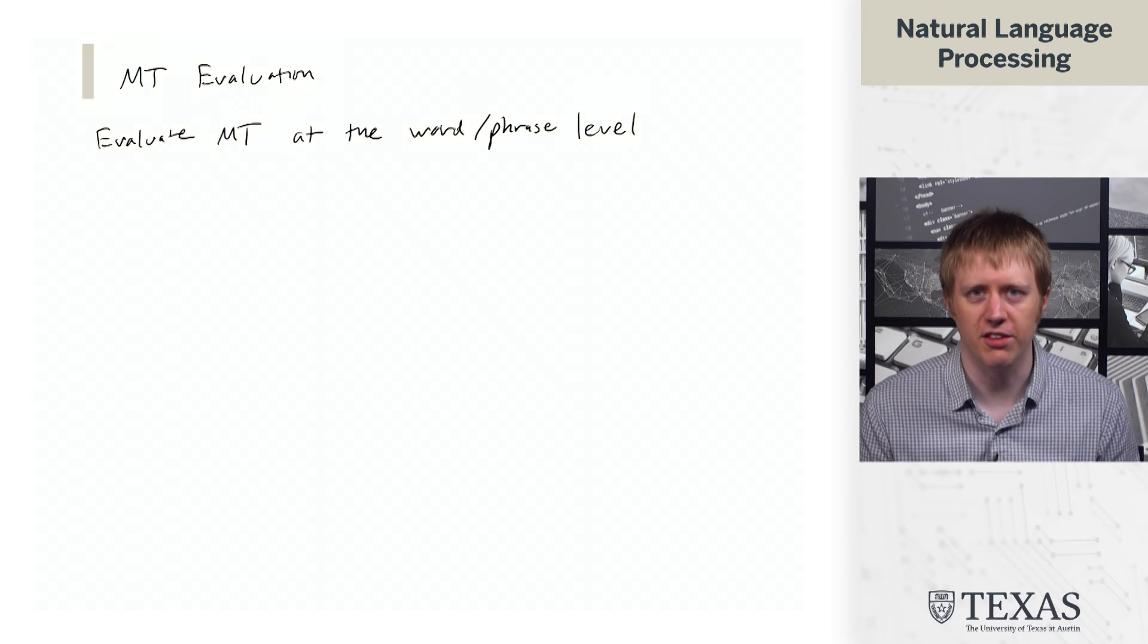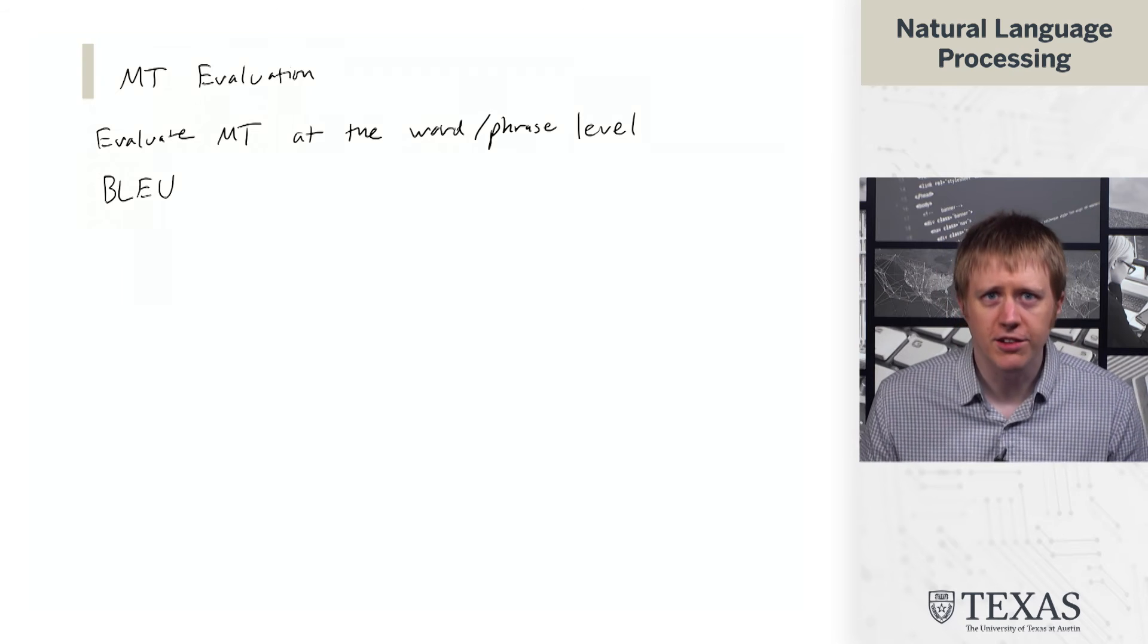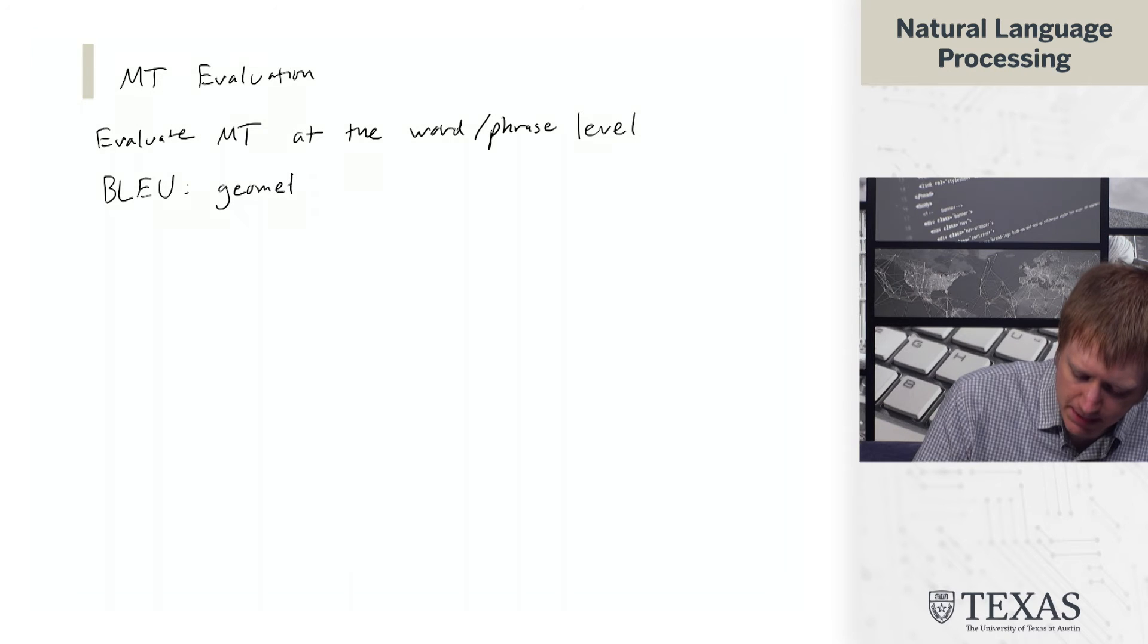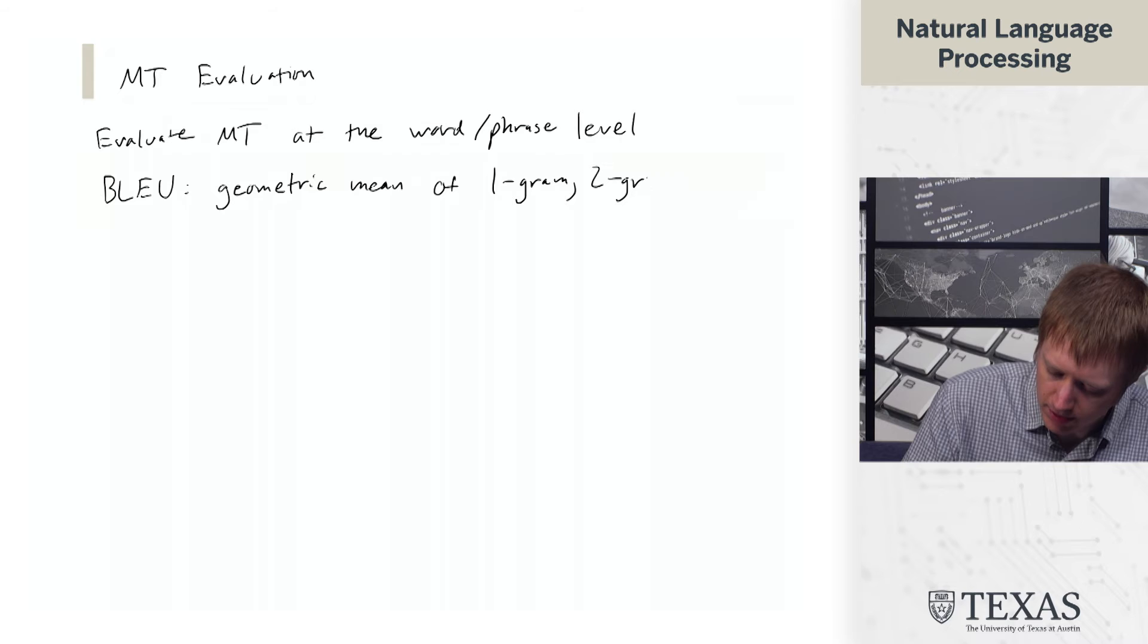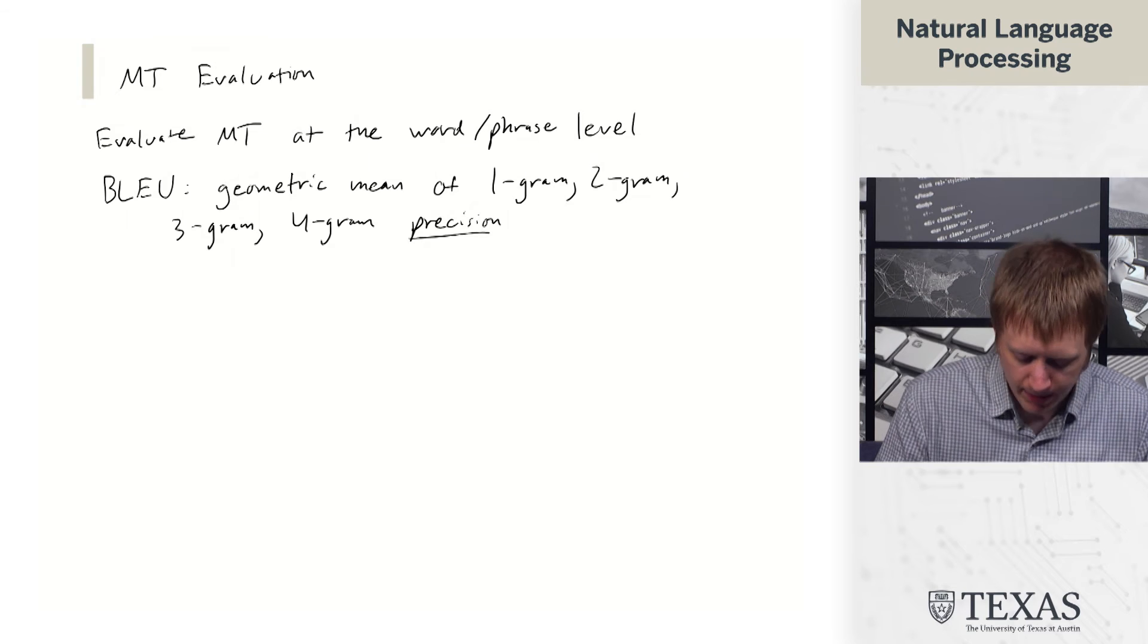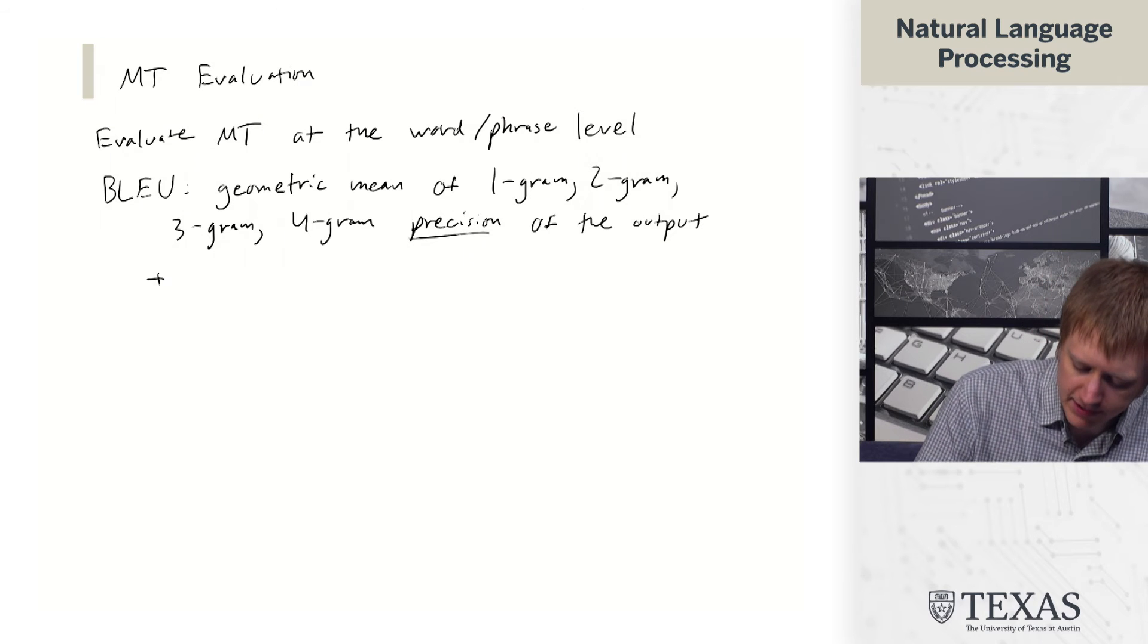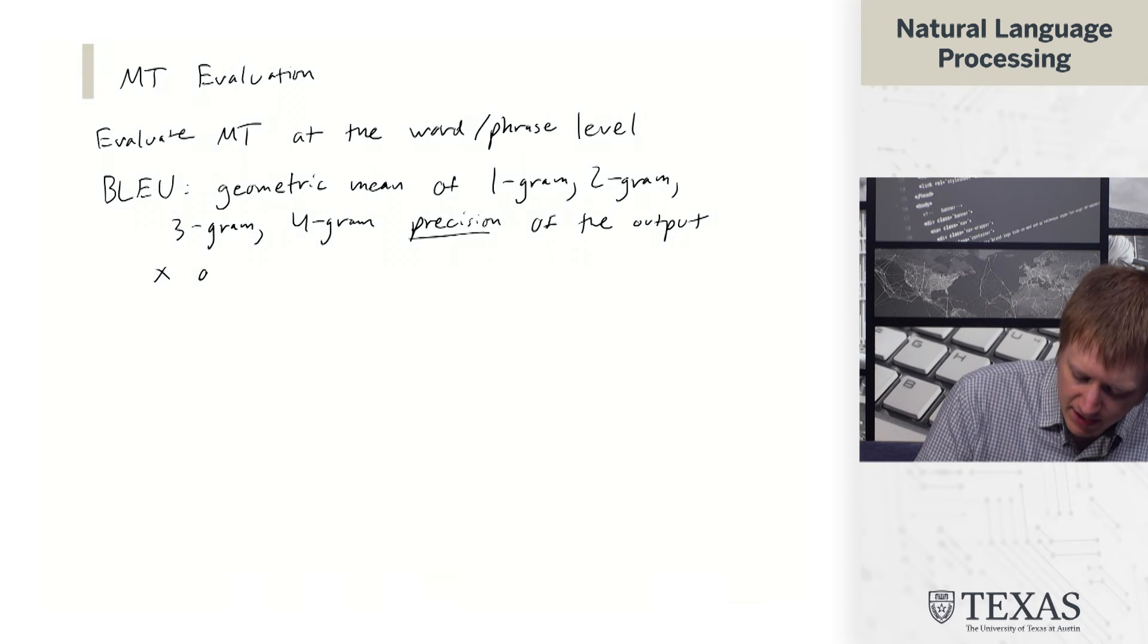I'm going to tell you about one thing which is the lowest common denominator here. And that's a metric called BLEU. BLEU is a metric that is defined as follows: it is the geometric mean of one-gram, two-gram, three-gram, and four-gram precision of the output, times a brevity penalty.